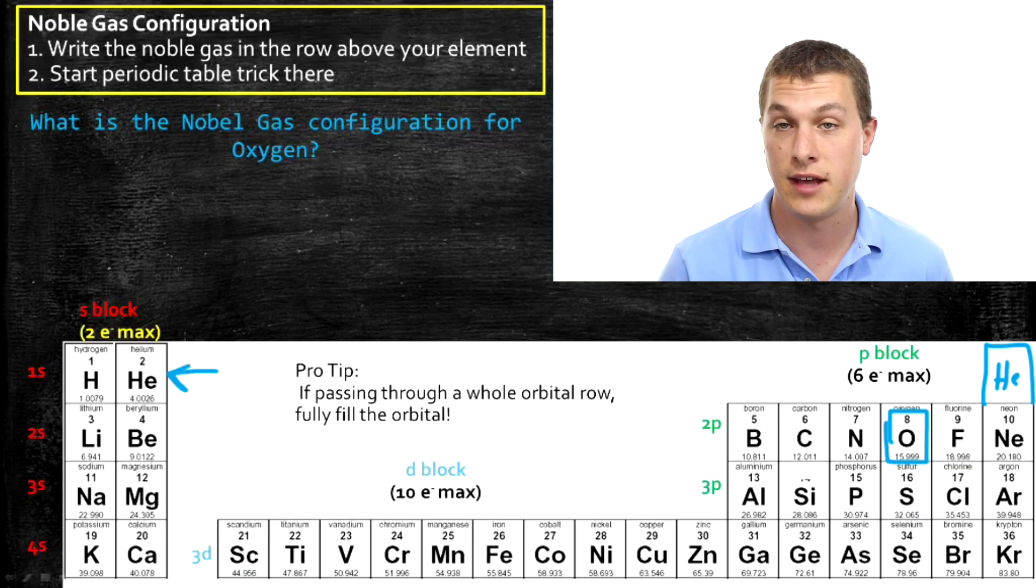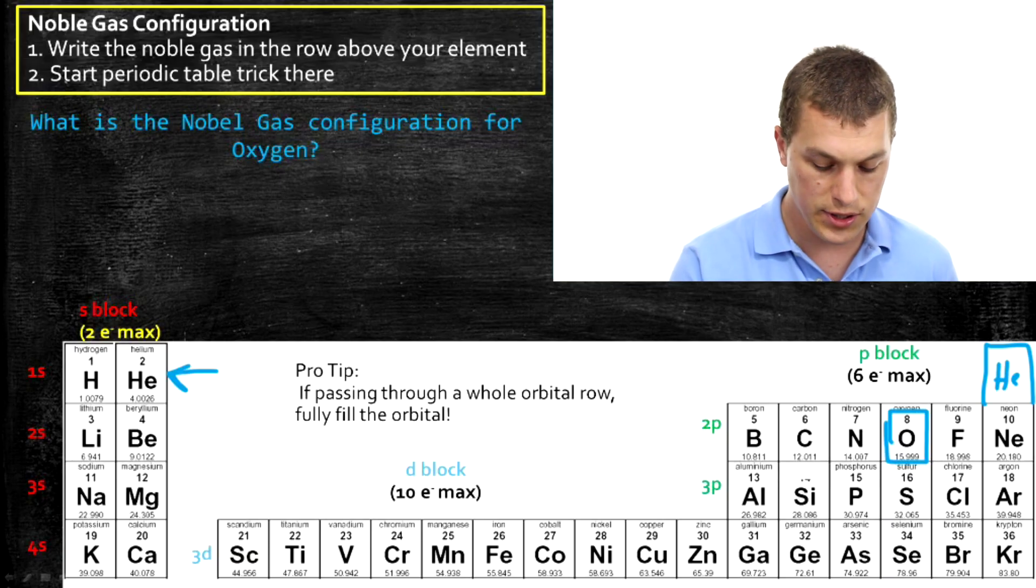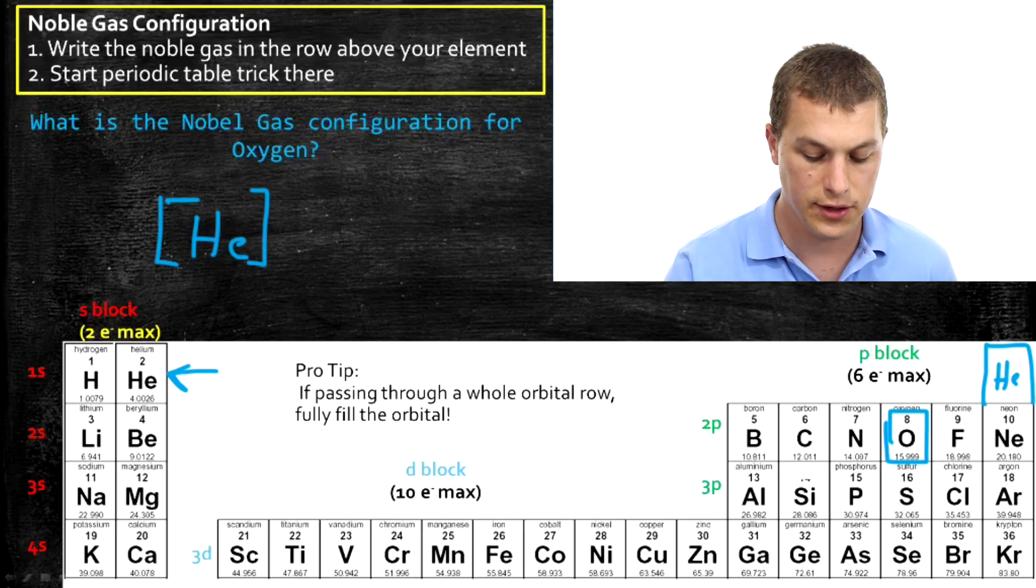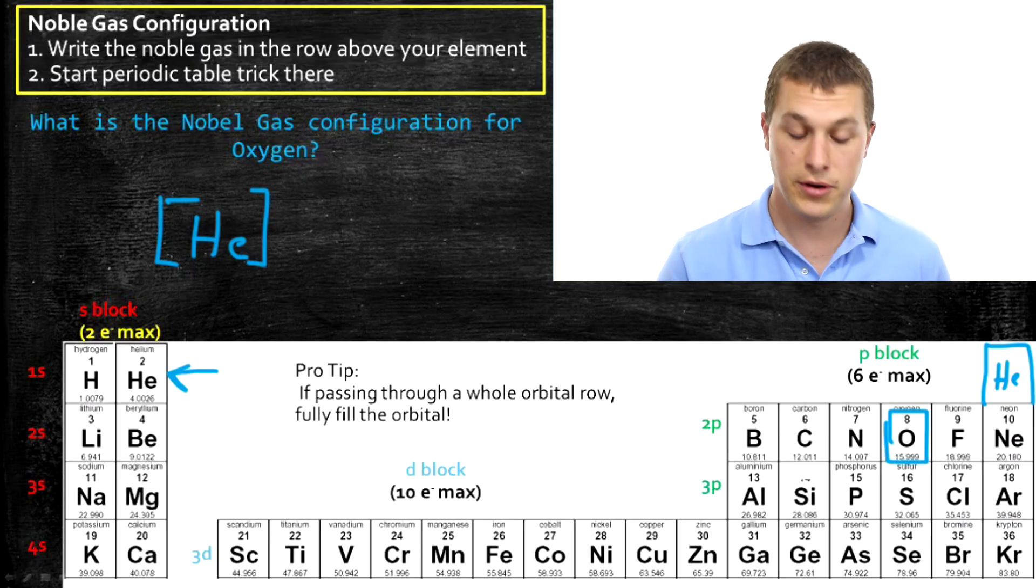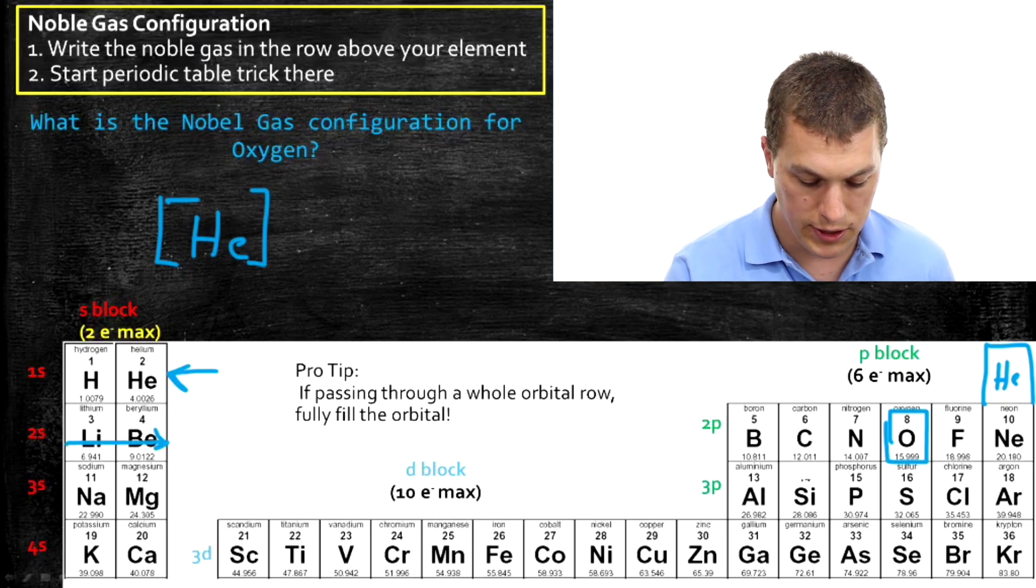But that's the noble gas on the row above oxygen, helium. If you put it in the right spot on the periodic table, then you can see that helium's a noble gas. So helium is the noble gas right above oxygen. And so we just start with helium. And what we're saying is, the first electrons that we have look exactly like the electron configuration of helium. And then we continue with our periodic table trick. And you see that we go through lithium and beryllium. And that would give us 2s2.